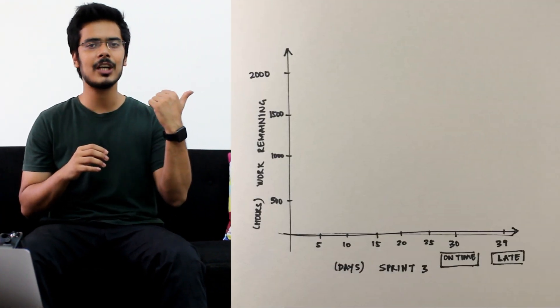This is where the burndown chart comes into the picture, which is the single most important reason of scrum's popularity. A burndown chart gives you a measure of the amount of work remaining in your current sprint. This is what the chart looks like.